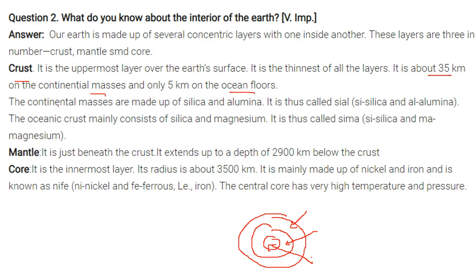So the continental masses are made up of silica and alumina, and it is called sial, that is silica and alumina, sial. The oceanic crust mainly consists of silica and magnesium. That is why it is called sima, S-I-M-A, sima, silica, magnesium.